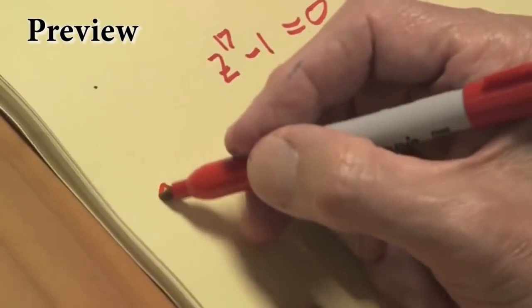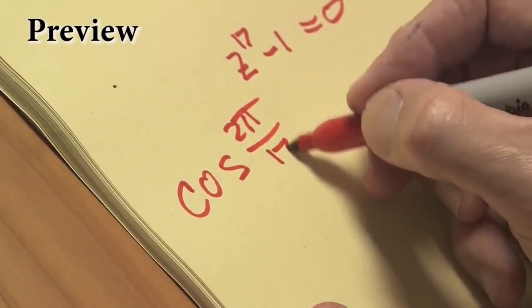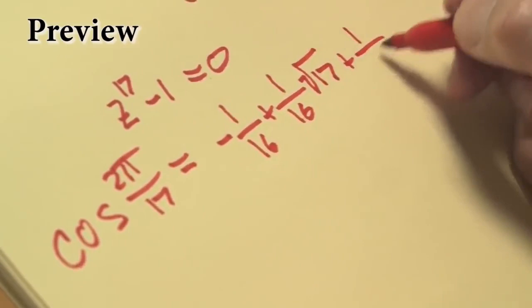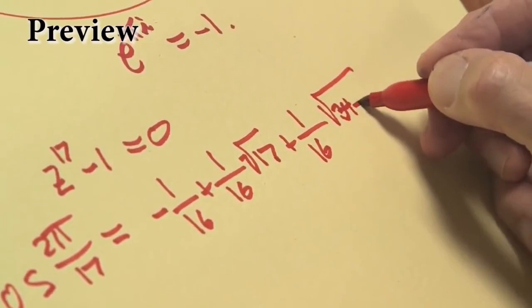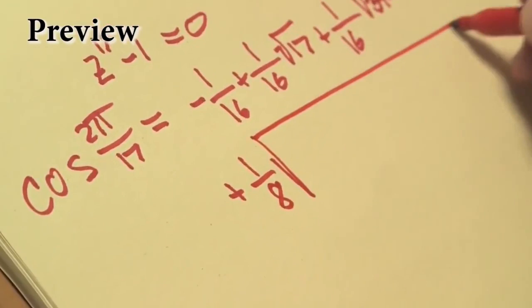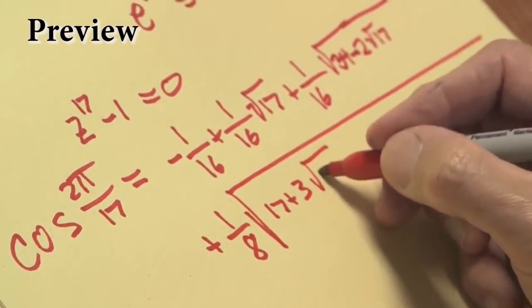So he showed, this is going to be a big formula, that the cosine of 2π over 17 was equal to minus 1/16th, plus 1/16th times the square root of 17, plus 1/16th times the square root of 34, minus, inside the square root sign, 2 times the square root of 17. You're allowed to take iterated square roots in this, plus 1/8th times a big square root of 17, plus 3 times the square root of 17.